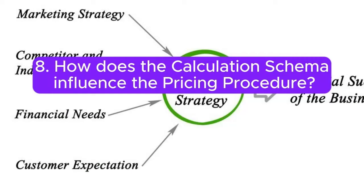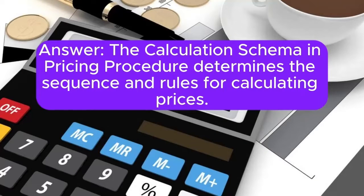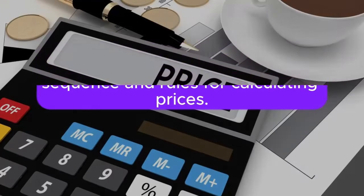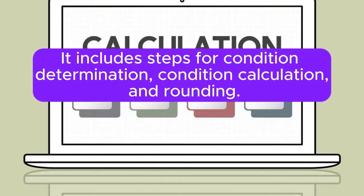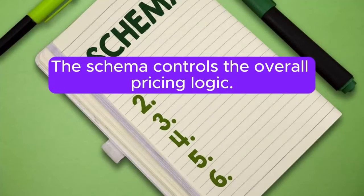Question 8: How does the calculation schema influence the pricing procedure? Answer: The calculation schema in pricing procedure determines the sequence and rules for calculating prices. It includes steps for condition determination, condition calculation, and rounding. The schema controls the overall pricing logic.